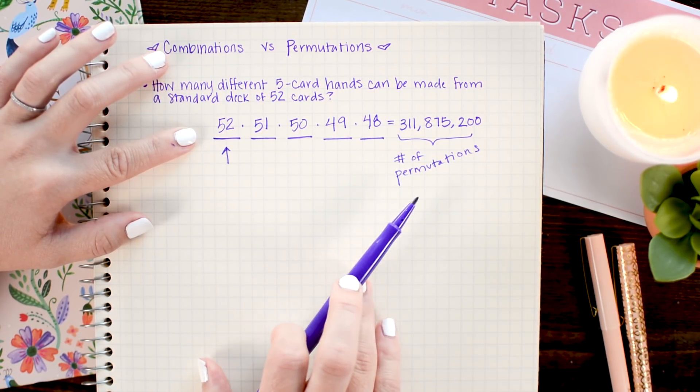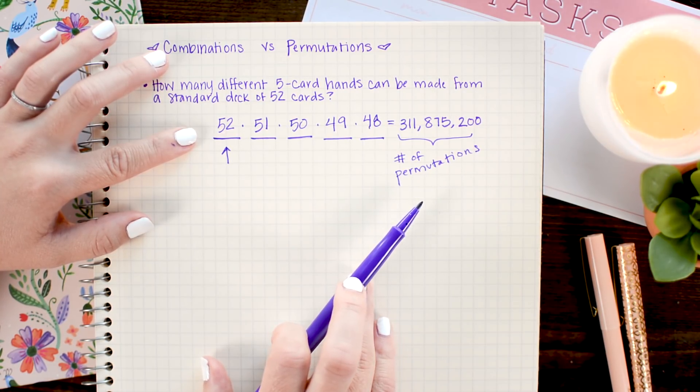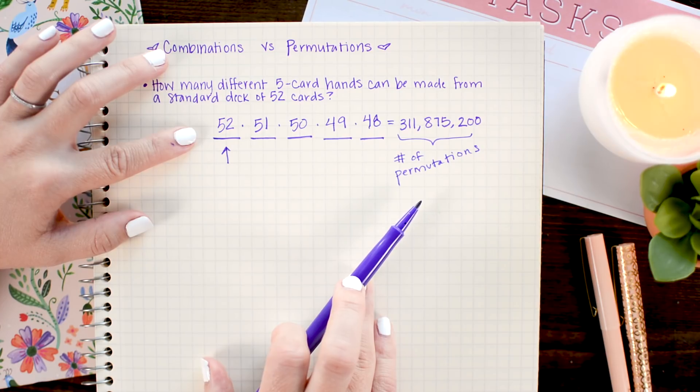So, so far, we've succeeded at calculating the permutations. Now, the question is, how do I get rid of those repeat hands? And to do that, I need to divide them out.